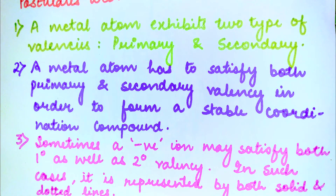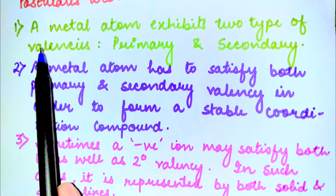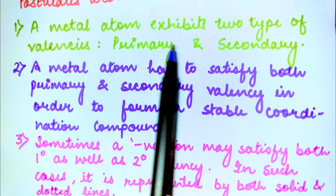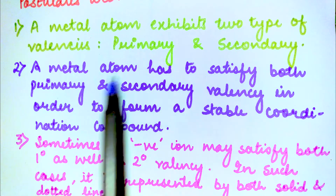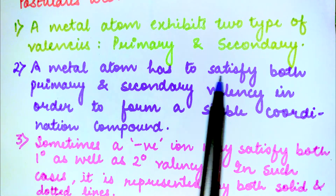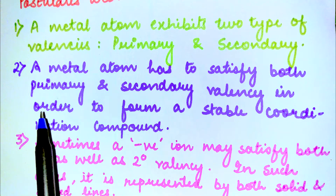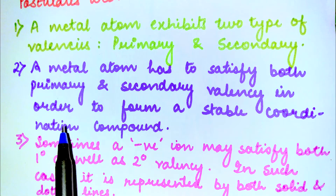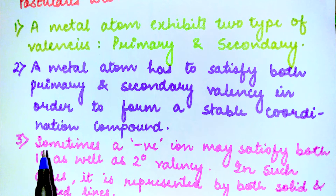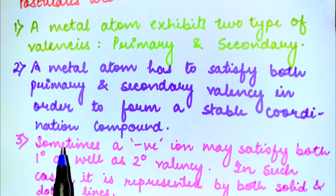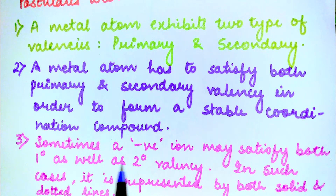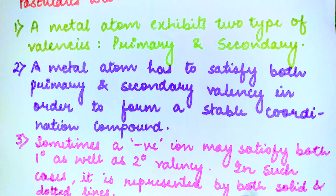So, a metal atom has two valencies: primary and secondary. The second postulate is that a metal atom has to satisfy both primary and secondary valency in order to form a stable coordination compound. The third postulate is that sometimes a negative ion may satisfy both primary as well as secondary valency, and in such cases it is represented by both dotted and solid lines.